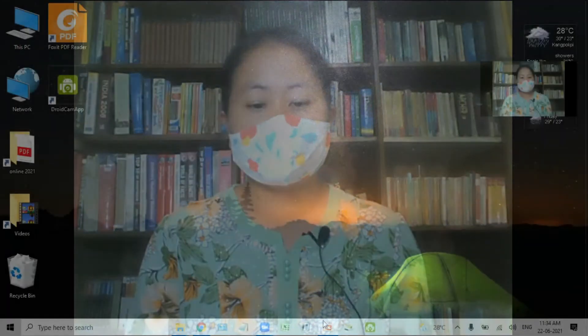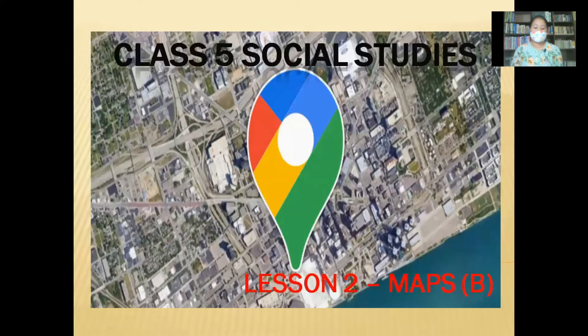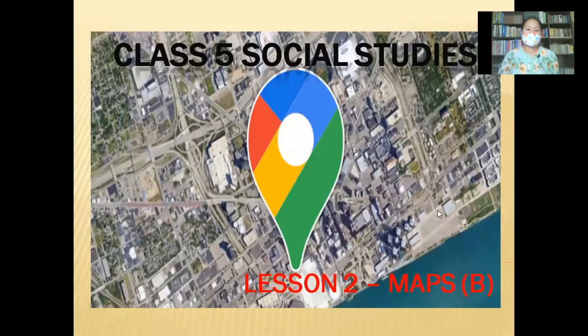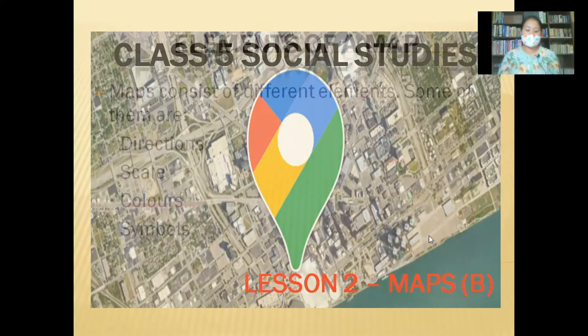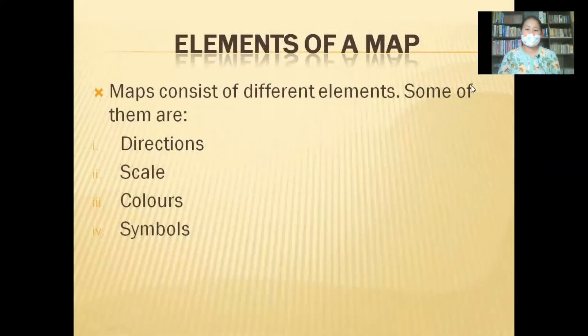This is classified social studies, a continuation relating to maps. In a previous class, we have learned what is a map and different types of maps. Today we will discuss elements of a map. A map consists of different elements.